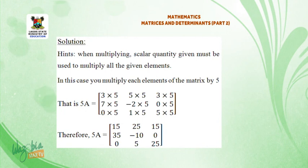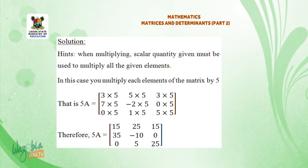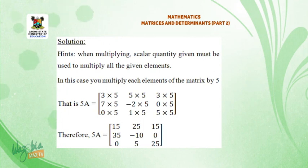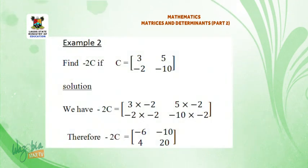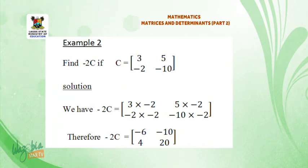Therefore, 5A is equal to the matrix: 15, 25, 15, 35, minus 10, 0, 0, 5, 25.